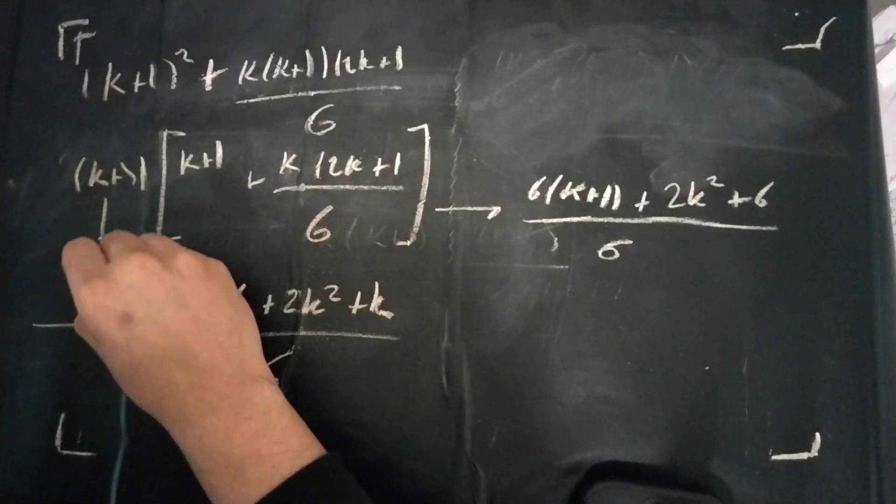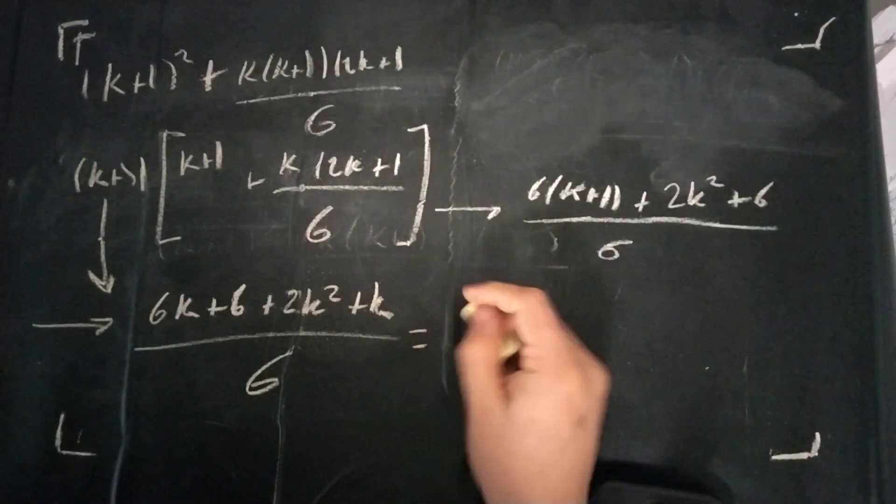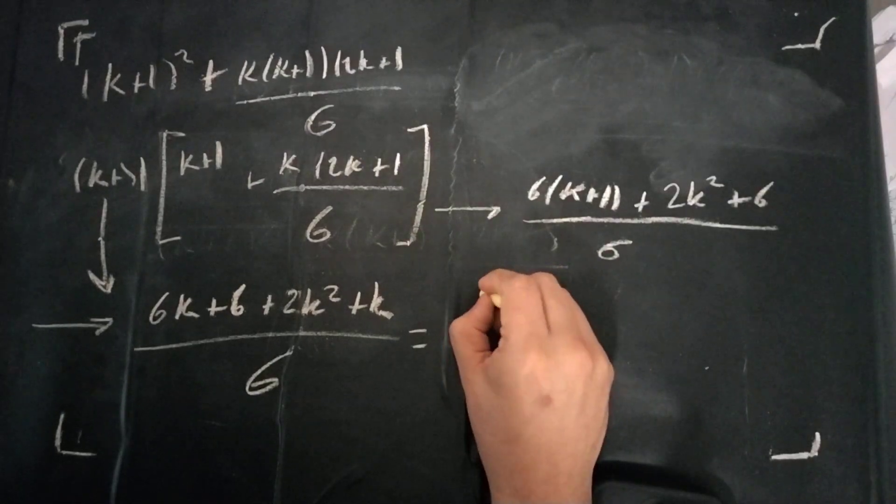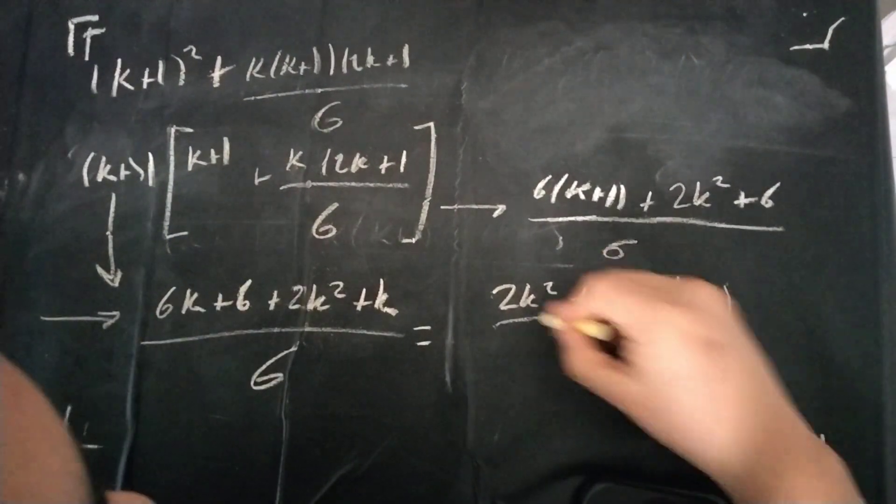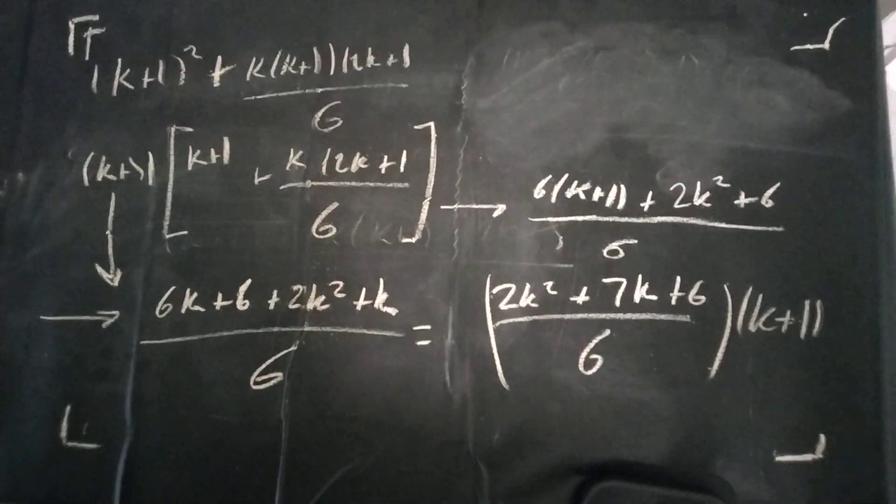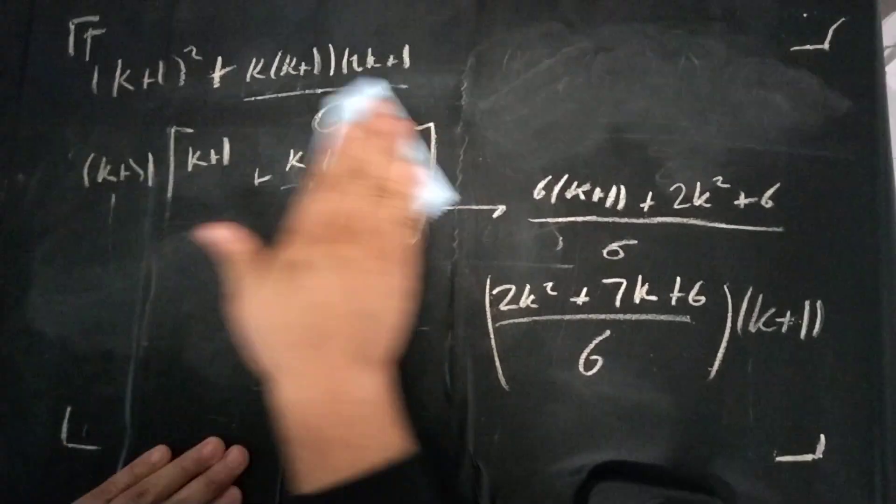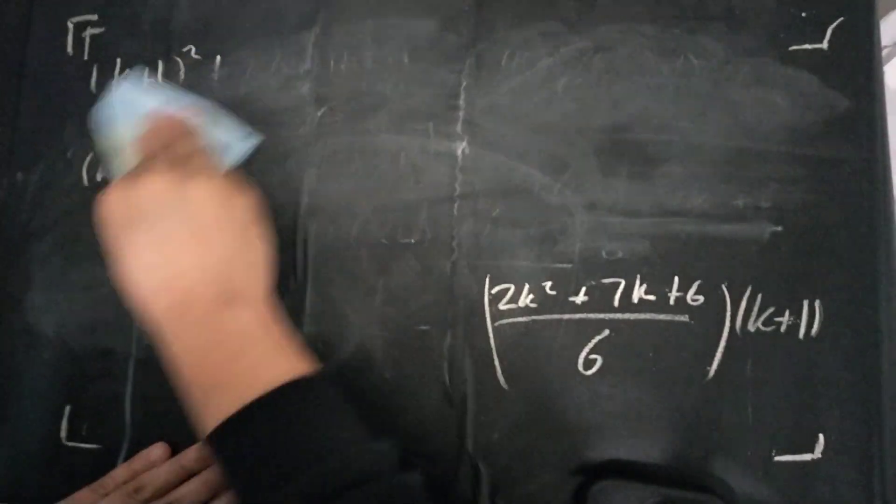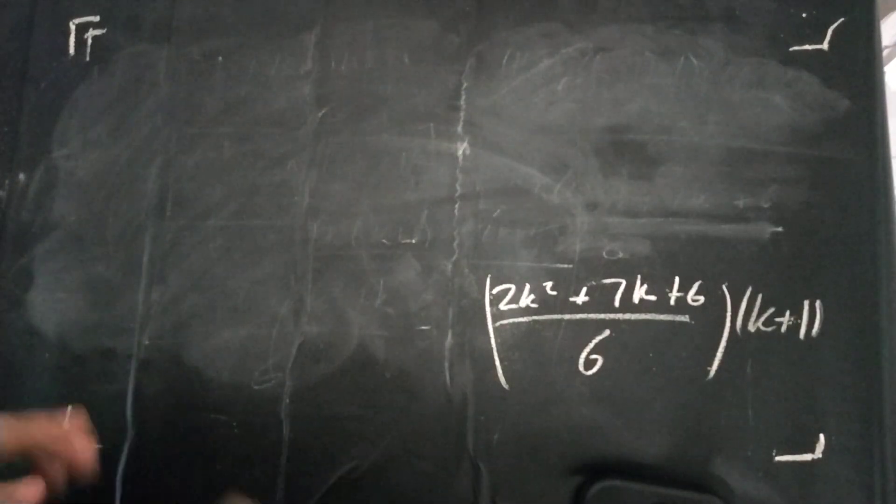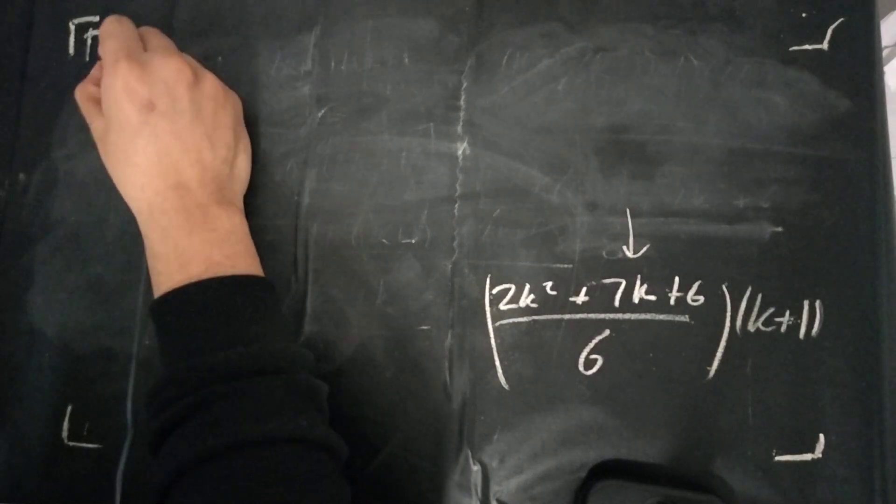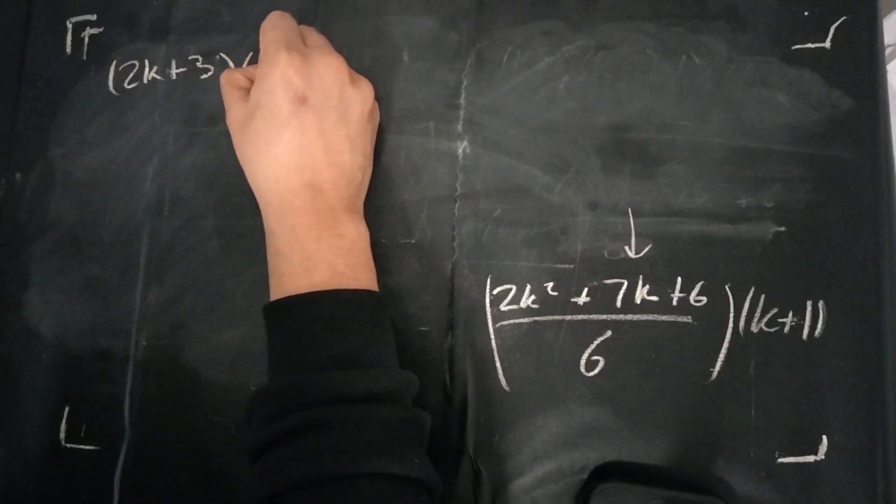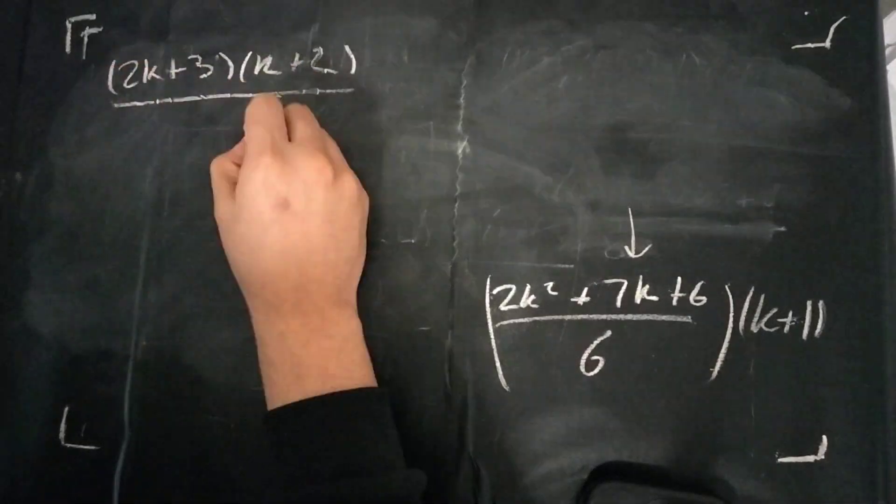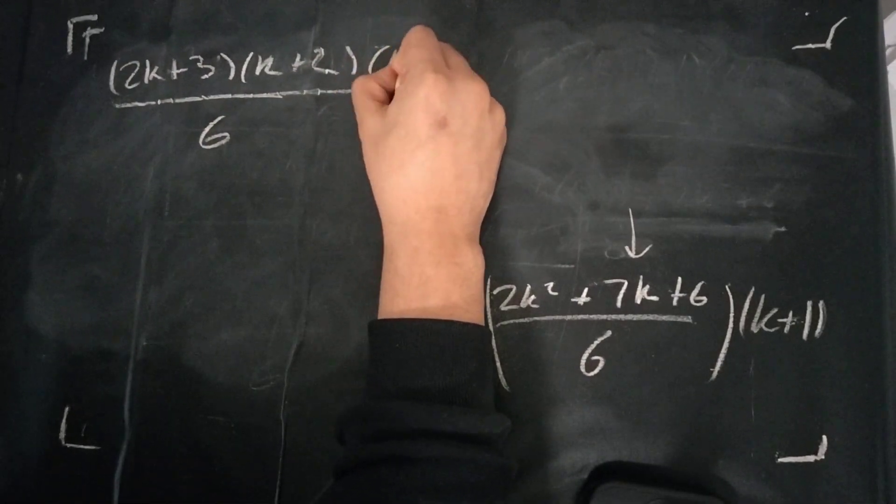We can then keep writing this as (6k+1+6 + 2k² + k)/6, and let's not forget, we still have this term out here. We can then solve this out to be (2k² + 7k + 6)/6, of course, with the k+1 term that we've already factored. From here, all we have to do is factor out this polynomial, and we end up with (2k+3)(k+2)/6 times k+1.